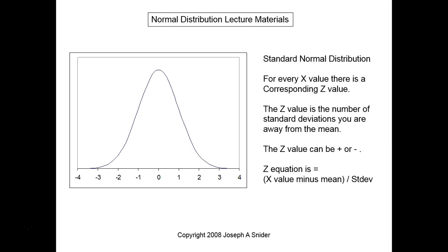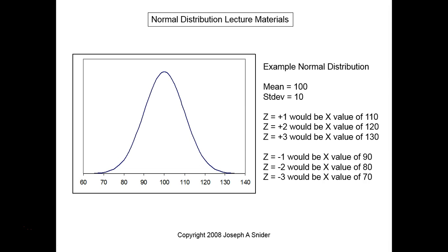Here's an example normal distribution with a mean of 100 and standard deviation of 10. So you're seeing anywhere from your 100, which is your mean, down to 90, 80, 70, 60 on the minus side.